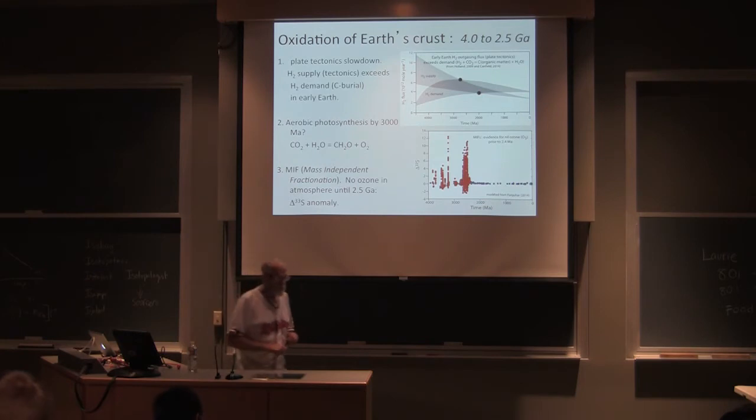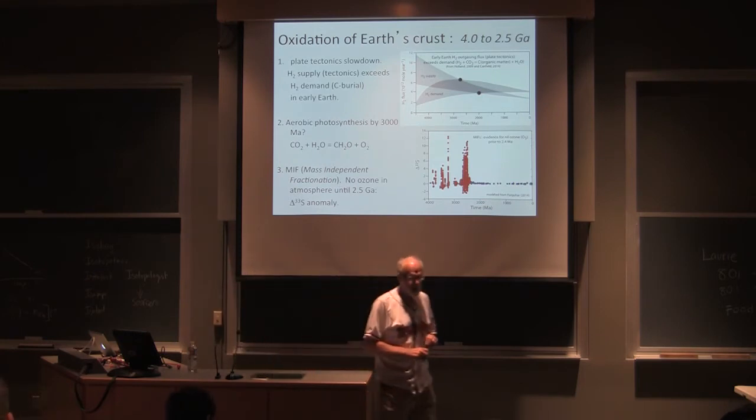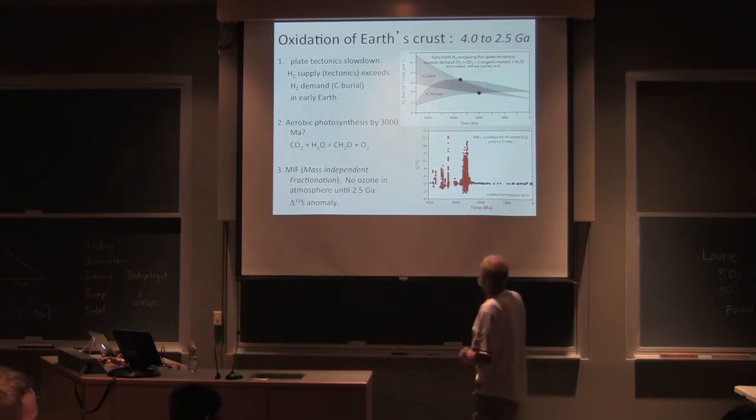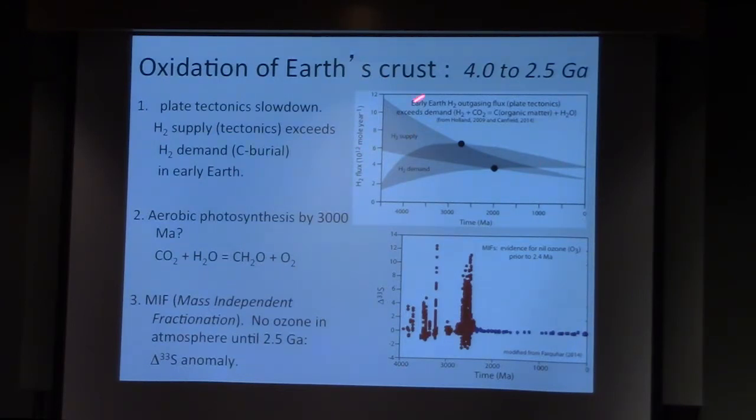Now, a couple of other things in geological history that are going on. We're outgassing things. This is a paper done by Dick Holland in the absence of isotopes, trying to figure out what could the history of our planet be with supply of hydrogen, the demand of hydrogen using various kinds of weathering products. It's kind of a hard thing to figure out.